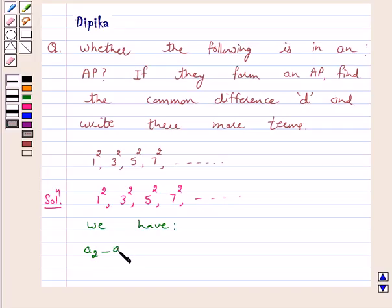A2 minus A1 is equal to 3 square minus 1 square which is equal to 3 plus 1 into 3 minus 1. This is equal to 4 into 2 which is equal to 8.